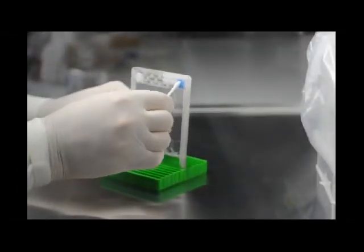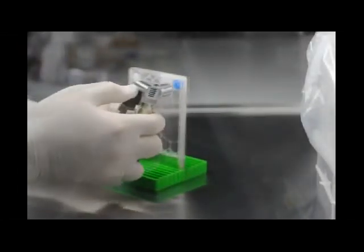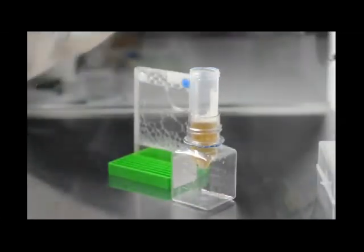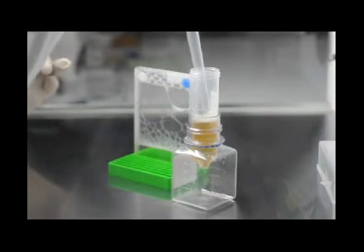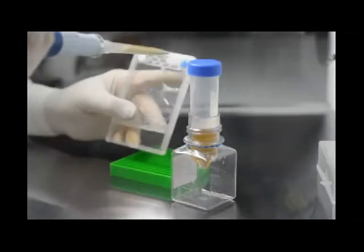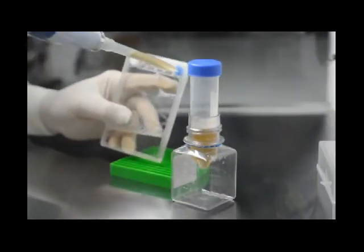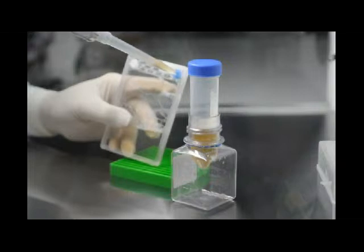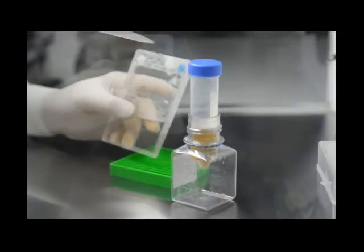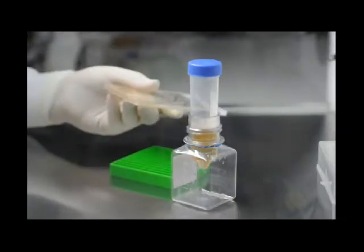Return to the laminar flow hood and sterilize the port again. Deactivate the trypsin with equal volume of serum using a 5000 microliter tip and pipette. Gently tilt the Pataka to collect all cells.